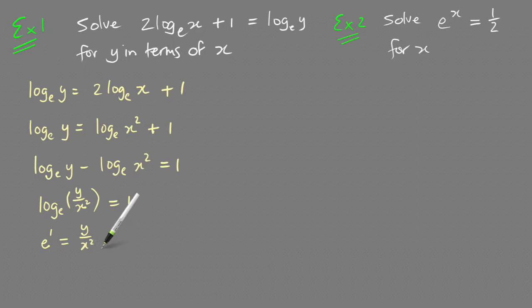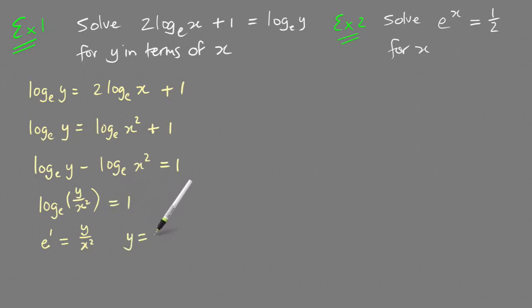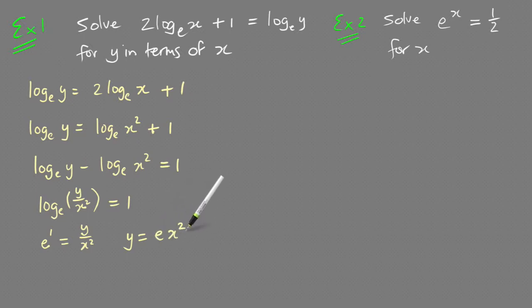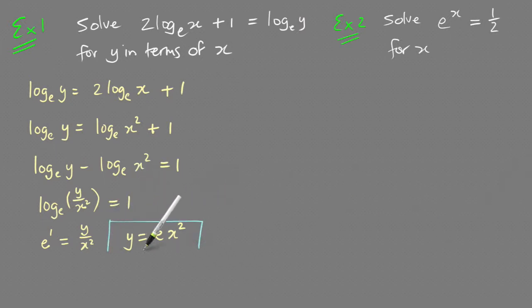The next step is just multiplying both sides by x². You end up with y = e¹ · x², which is just y = ex². And that is the answer — y is the subject in that equation.